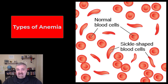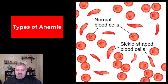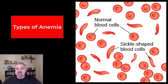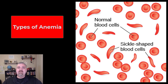Then you have aplastic anemia, which means you don't have enough of the stem cells in your bone marrow to produce enough red blood cells. That can be genetic, but it can also be caused by medications, chemotherapy, radiation, or infections. There are lots of things that can lead to aplastic anemia.